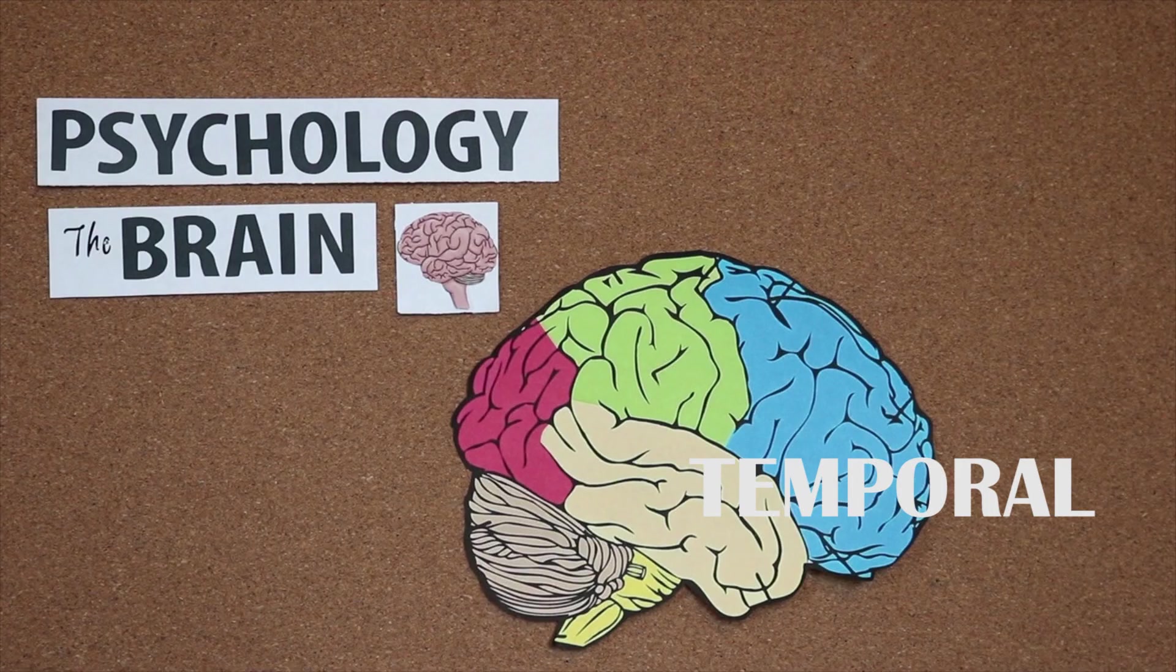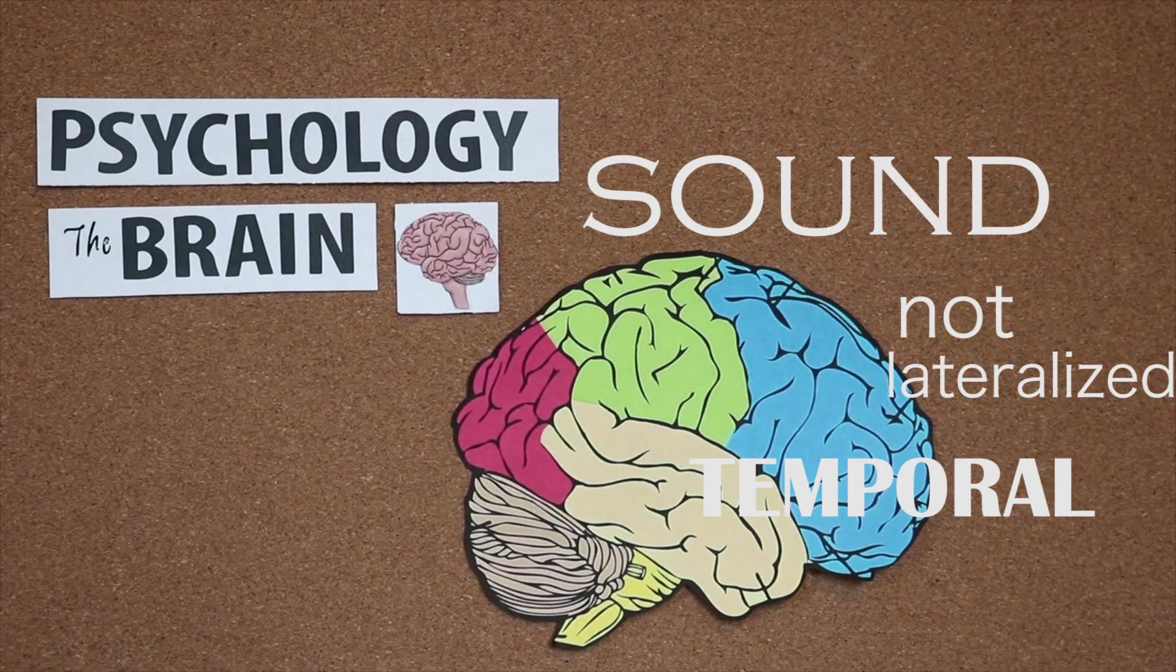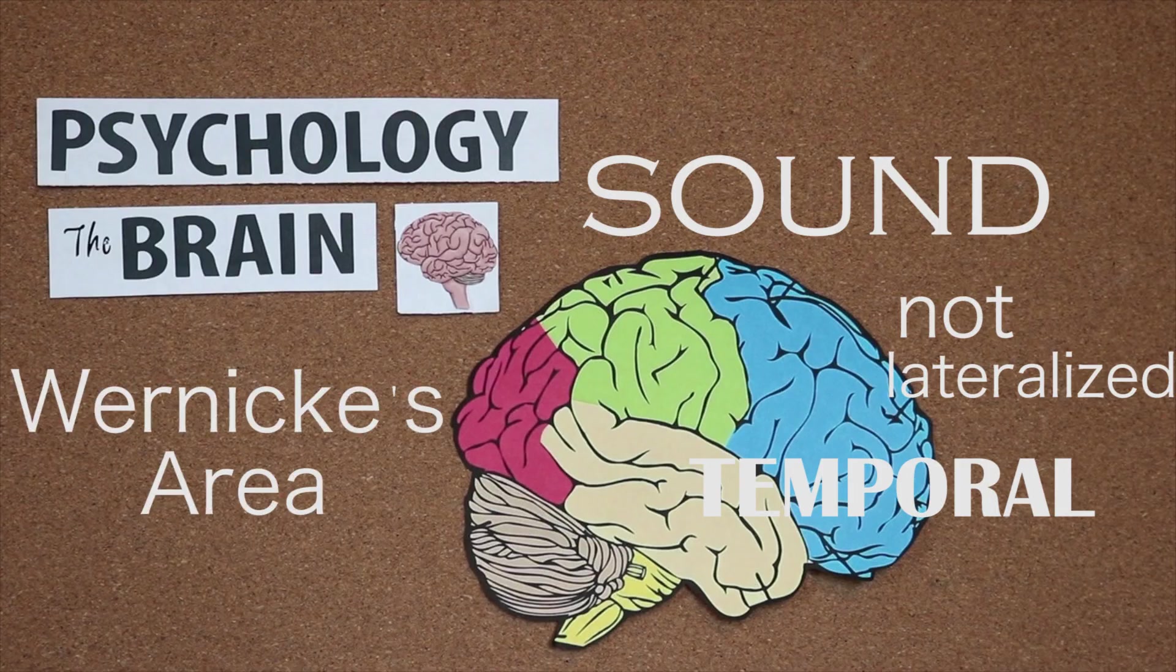And the temporal lobes right by our ears process sound. Sound, unlike sight, is not lateralized, and when it enters our left ear, is processed in both hemispheres. And this is also where our second language processing center is located, Wernicke's area. This center interprets speech, and when damaged, causes receptive aphasia, or the inability to comprehend speech.